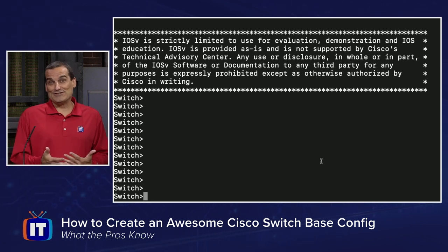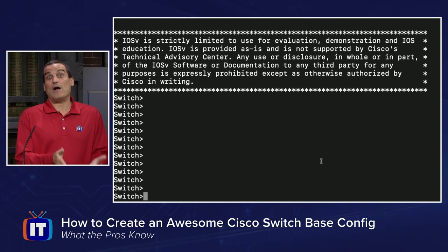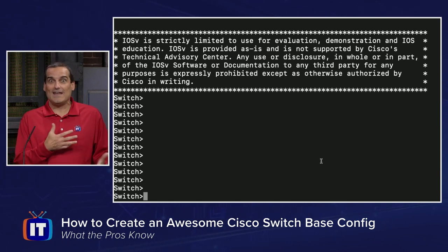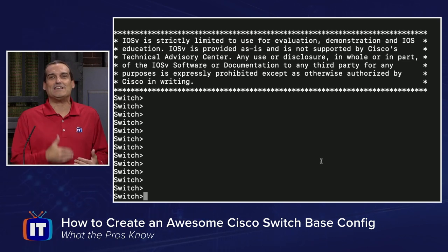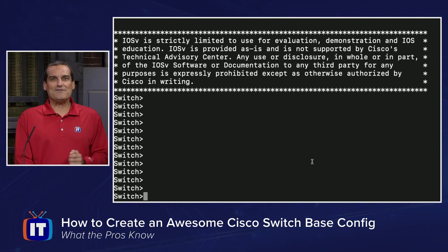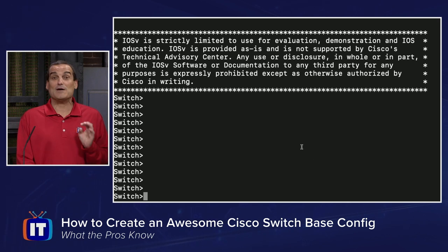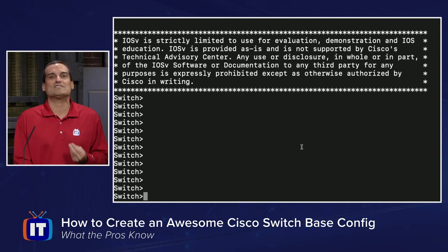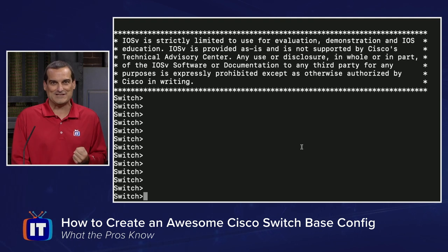I will be sure to put together an episode where we do a router base config, but it's not going to be that different. A lot of these configuration parameters are going to be just like we would do on the router. Notice that we have this banner message from Cisco here, and a banner message is most likely going to be a requirement on your Cisco switch.